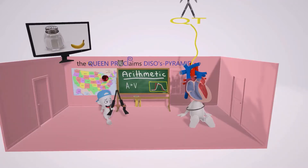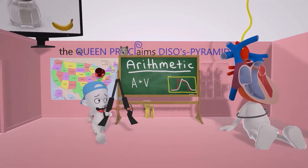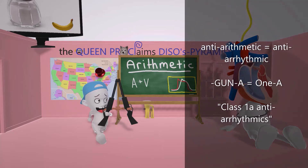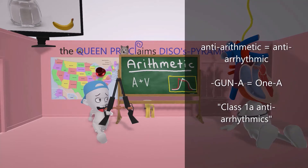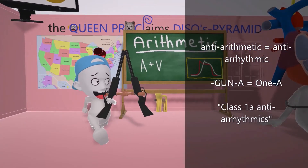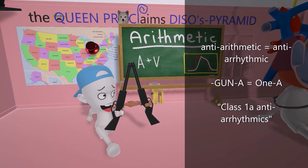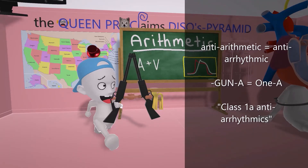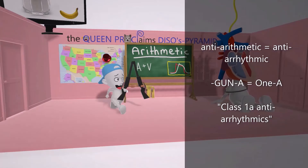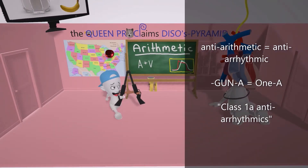In this scene we're going to talk about class 1 anti-arrhythmics, and specifically class 1A. It's going to be represented by this student over here, who doesn't like arithmetic — he's anti-arithmetic. Anti-arithmetic reminds us of anti-arrhythmic, and he always has this gun with him. It's actually three guns together that make the shape of an A — gun A for 1A. In this scene, he hijacked his class, which reminds us of class 1A anti-arrhythmic drugs.